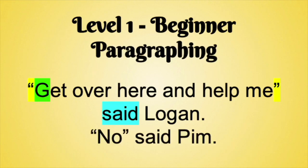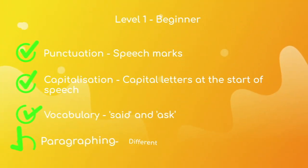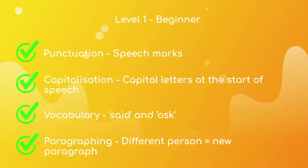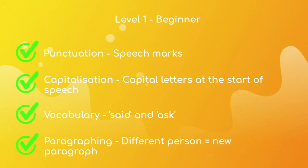Next, we have paragraphing. To show this example, we are going to introduce Pim, who will reply to the statement. Because dialogue occurs with multiple characters, it is important to identify when a new person is speaking. This is done by starting a new paragraph when a different person begins to speak. To summarise the beginner level: use speech marks, capital letters at the start of each speech, 'said' or 'asked' to identify who is speaking, and a new paragraph for every different speaker.